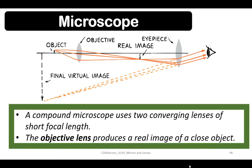Next is microscopes. A compound microscope uses two converging lenses of short focal length. The objective lens produces a real image of a close object. In the revolving nosepiece, three types of objectives are attached.